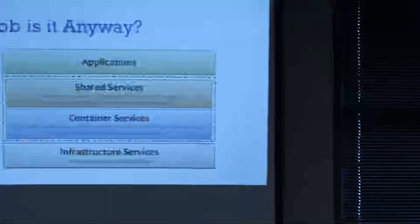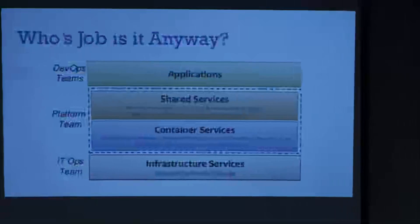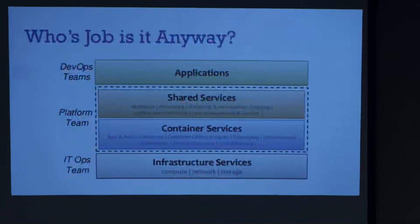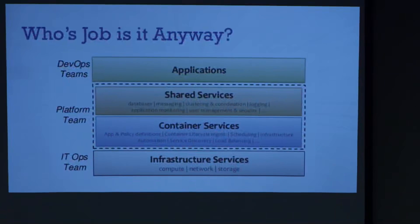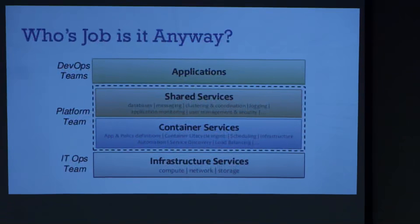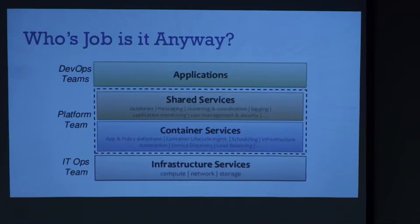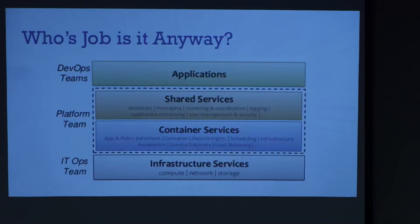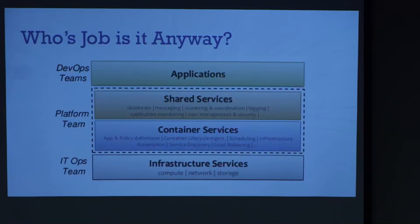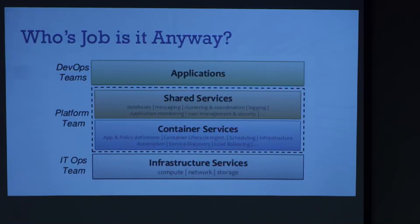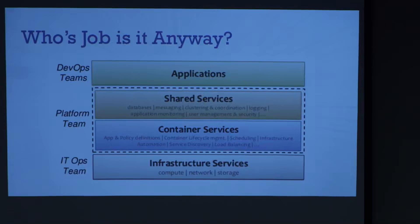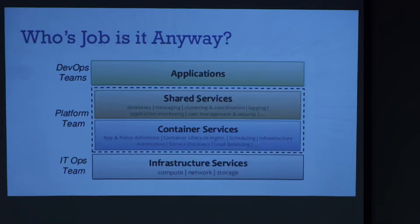Whose job is it anyway? You generally see a couple of different models. Bigger shops moving their entire stack onto Kubernetes will have a platform team that handles the control plane, setting up infrastructure, basic things like RBAC and authentication. Then those things become self-serviced by the teams — a big theme is that everything needs to be self-service, so you can delegate rights down to teams.